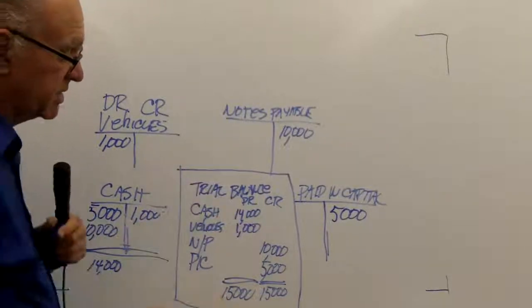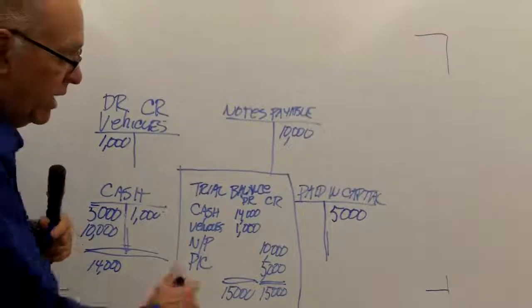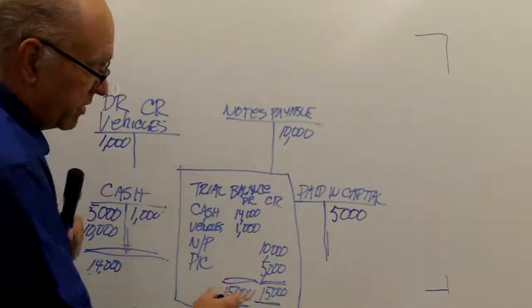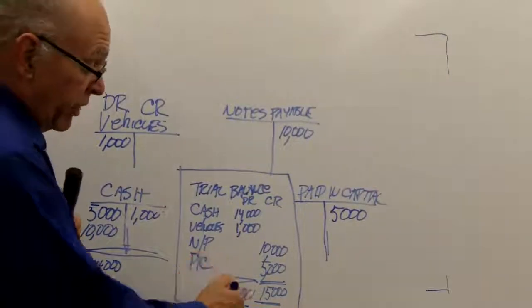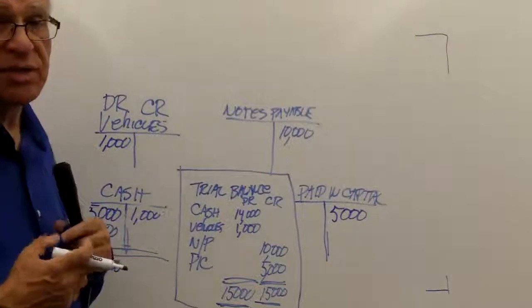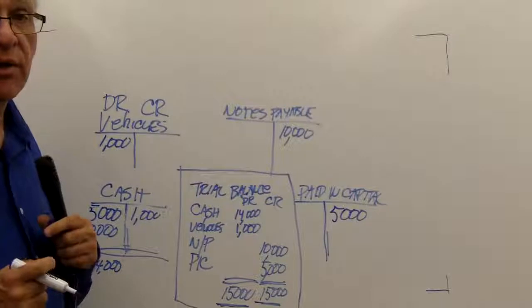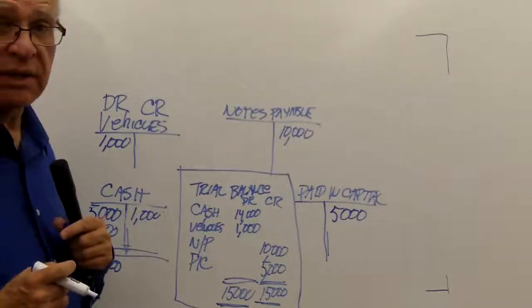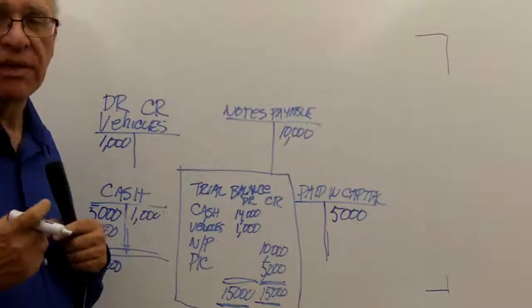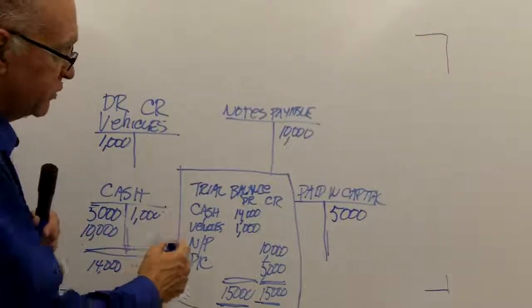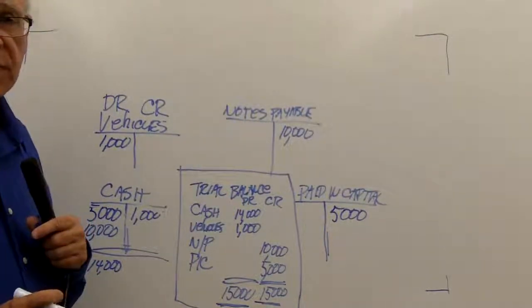I can then complete a trial balance that shows all of my accounts and their debit and credit balances. I will then want to ensure that my debits equal my credits. Now, to make a long story short, these could balance, but I could still be incorrect. Because I could have, for instance, credited something when I should have debited it and debited something when I should have credited it. So I would still be in balance, but I had done the wrong thing.